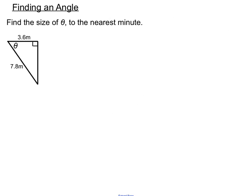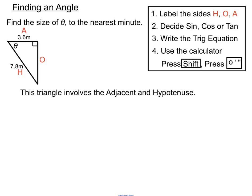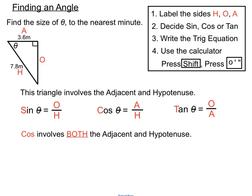Let's see another example — finding the size of θ again with a new set of numbers. The hypotenuse is the longest side, the side opposite the angle is on the right-hand side this time, and the 3.6 is in the adjacent position. This triangle has numbers on the adjacent and the hypotenuse. The ratio that works well with adjacent and hypotenuse is the cos ratio — so we'll use cos for this question.